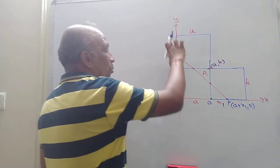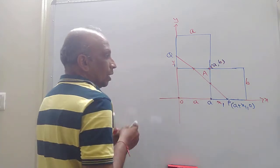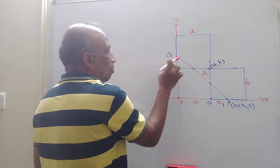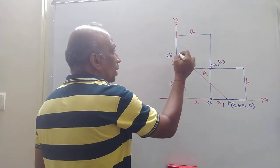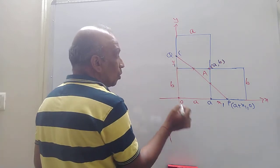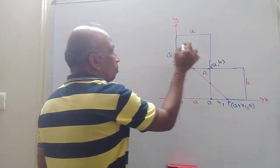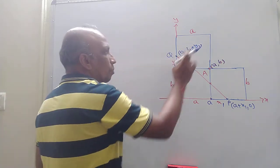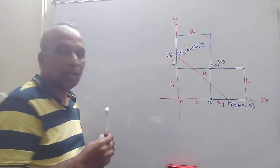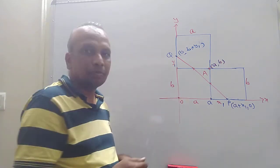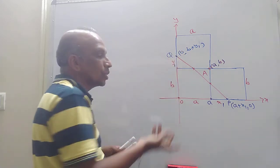At the same time, think about the Y axis. This distance is B, and this is also B. B plus Y1 — you can think about point Q. On the Y axis, X should be 0, so point Q will be 0 comma B plus Y1. OP is called the X intercept and OQ is called the Y intercept.